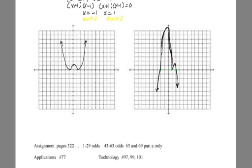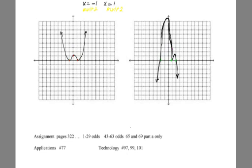So here's the assignment for 3.2. Some problems from the book. Work on the course compass stuff. But always go back and look at the applications and the technology. And now that you've gotten a little more practice with your calculator, go back and look at the technology problems.